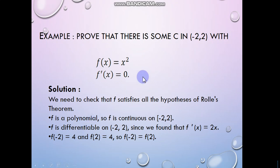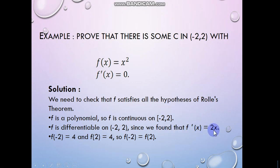Continuous means the function gives a finite value at each point. Now for the second condition — differentiability. For differentiability, we find f'(x). The derivative of x squared is 2x.